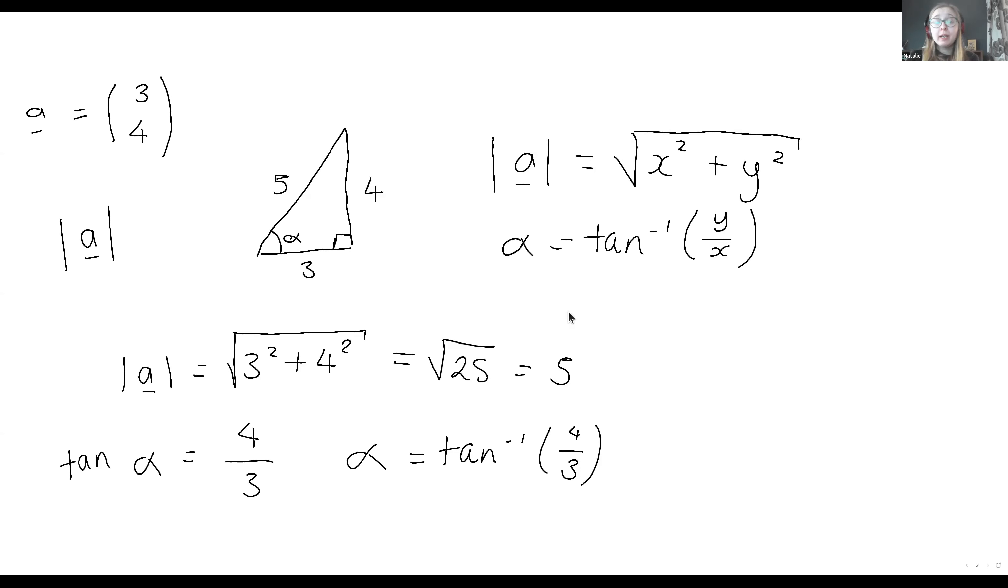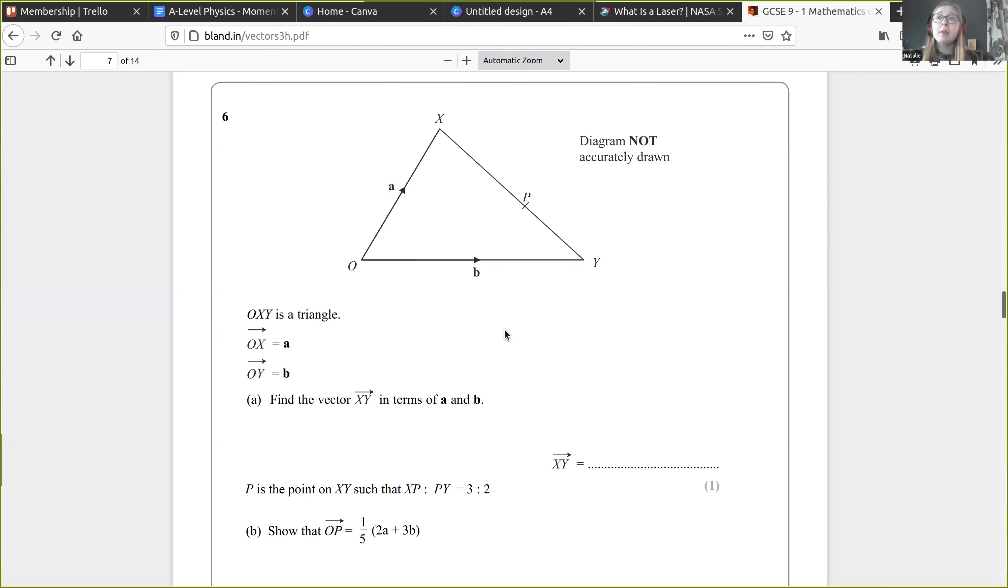So we can now write our vectors as column vectors or as unit vectors. We can work out the magnitude and the direction, and the place where people tend to fall over is the geometry, the geometrical problems that we might need to solve. So I've got an example one. It's actually a GCSE question, but it's really good for reminding ourselves of how vectors work. We've got vectors forming a triangle, triangle O, X, Y. We need to find the vector, first of all, X, Y. Hopefully that's nice and straightforward.